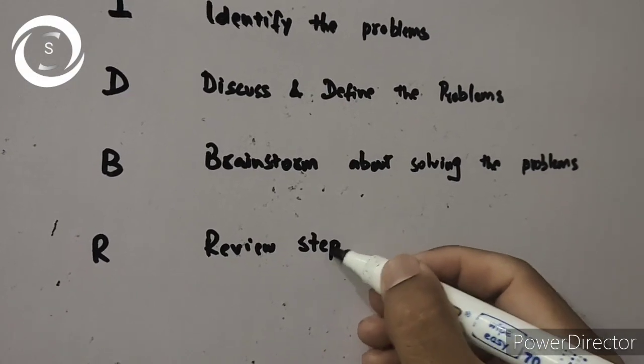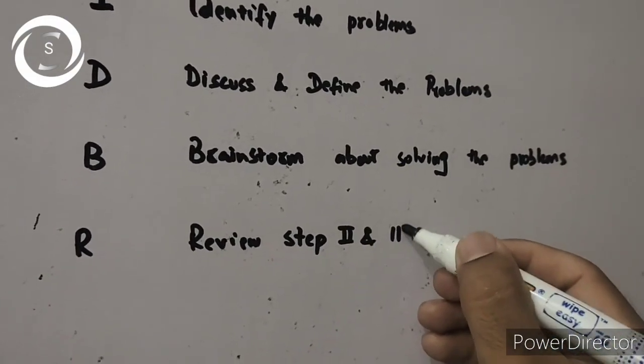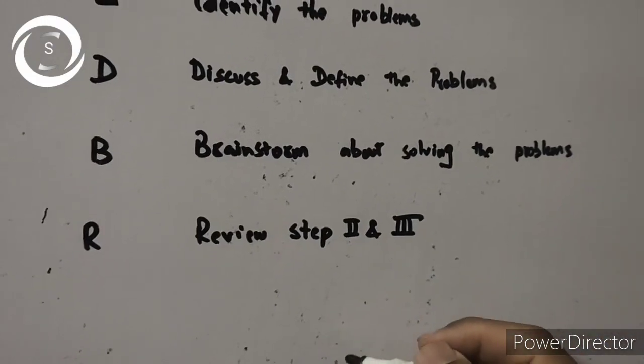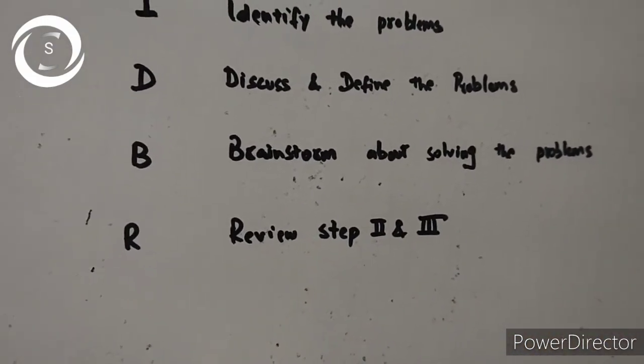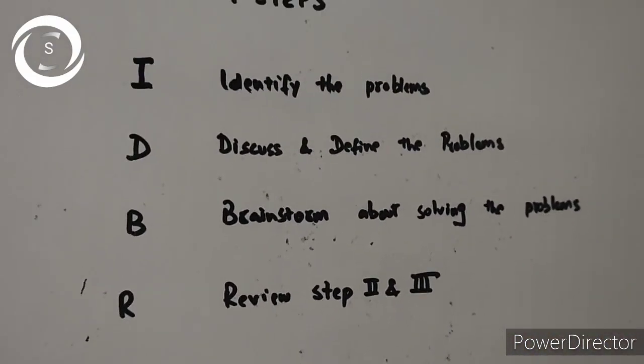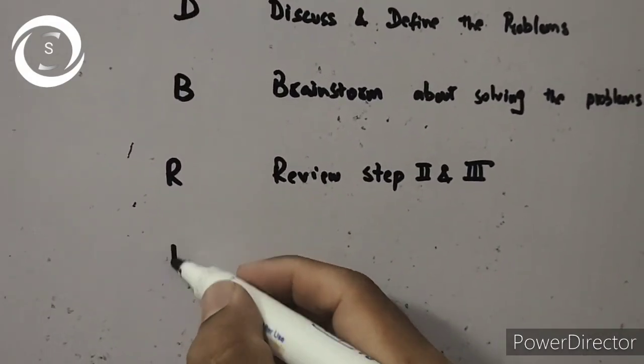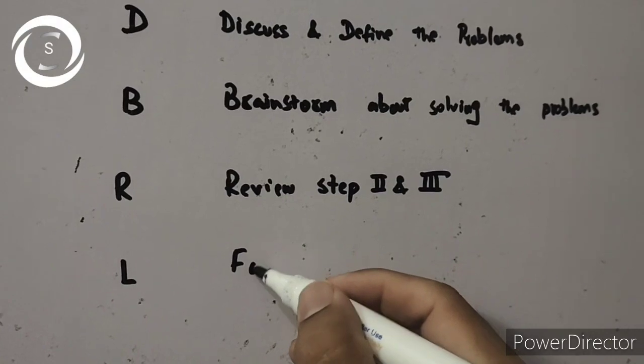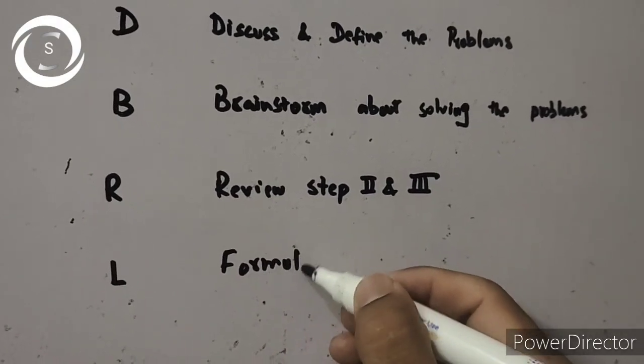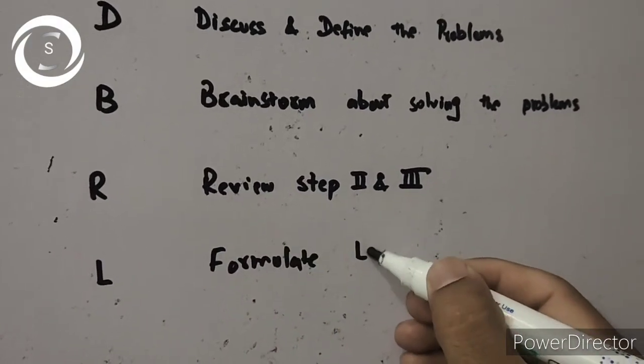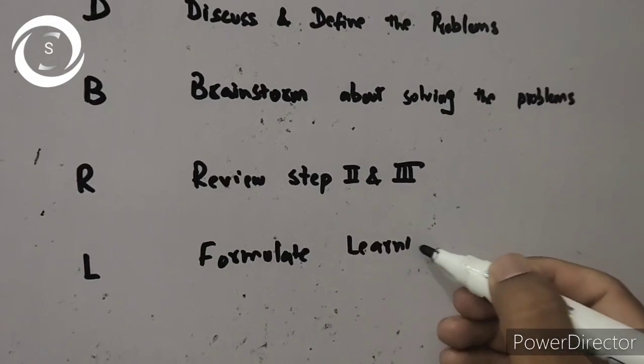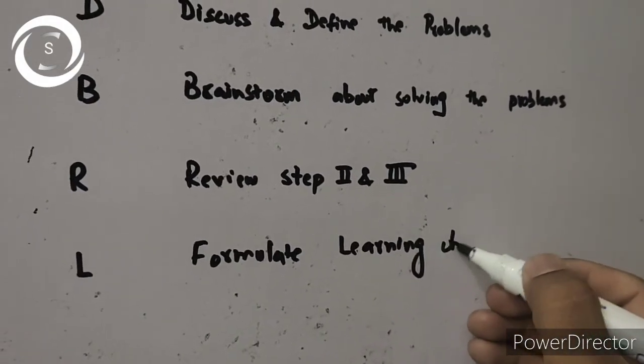Then fifth step is L, formulate the learning objectives. Group reaches consensus on the learning objectives that from the above mentioned article or scenario these are the learning objectives that the group should achieve.